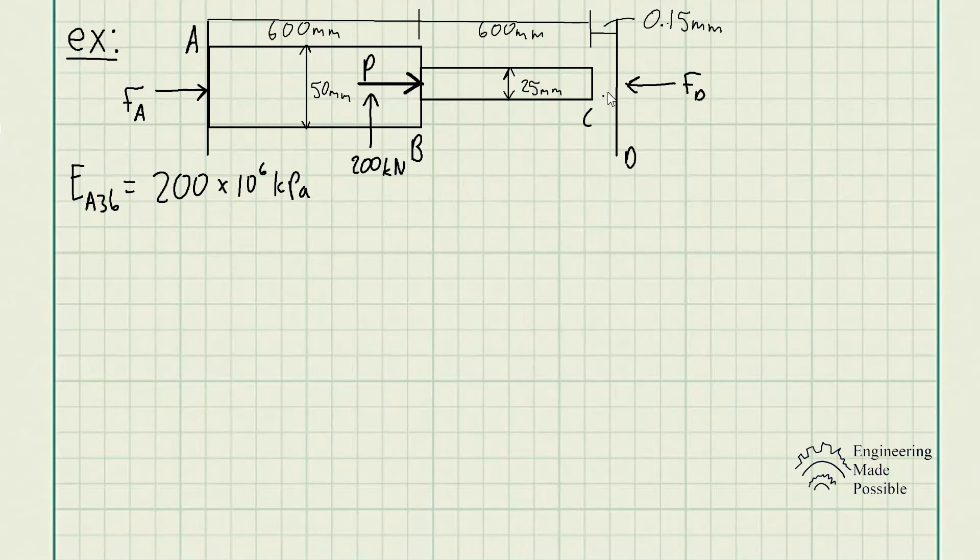once this rod assembly actually deforms up until the wall, since we do have this initial gap. Step one would be to remove the constraint at point D here at the end, and then solve for the deformation of this entire assembly, assuming there is no constraint at this end.